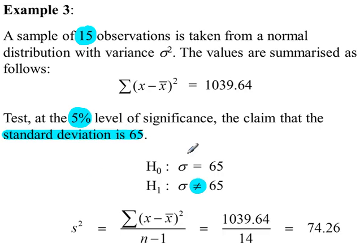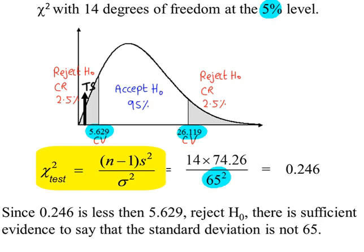H0 and H1 can be written in terms of a standard deviation, if that's what you're testing, or a variance, if that's what you're testing. But the actual test — this formula, the test statistic — is all in terms of a variance. So sigma-squared in the formula must be a variance and not the standard deviation. The final conclusion is in terms of whatever you're testing for, whether it's standard deviation or variance.